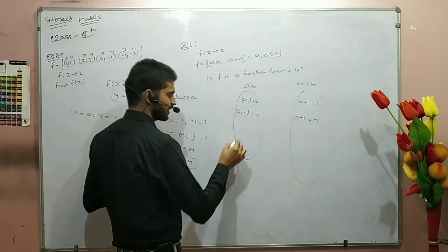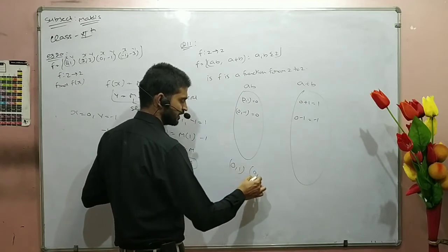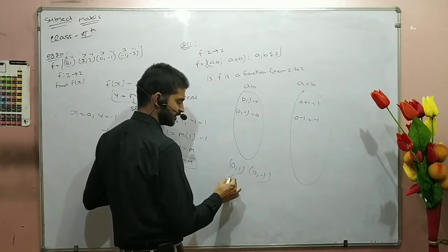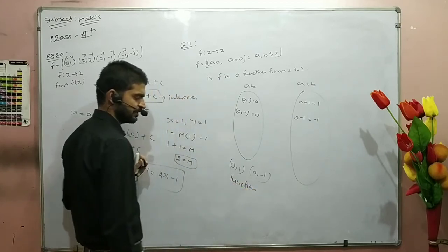We can check that 0 has two images: 0 to 1 and 0 to -1. So this function is not onto. The function is different from each element in the image.